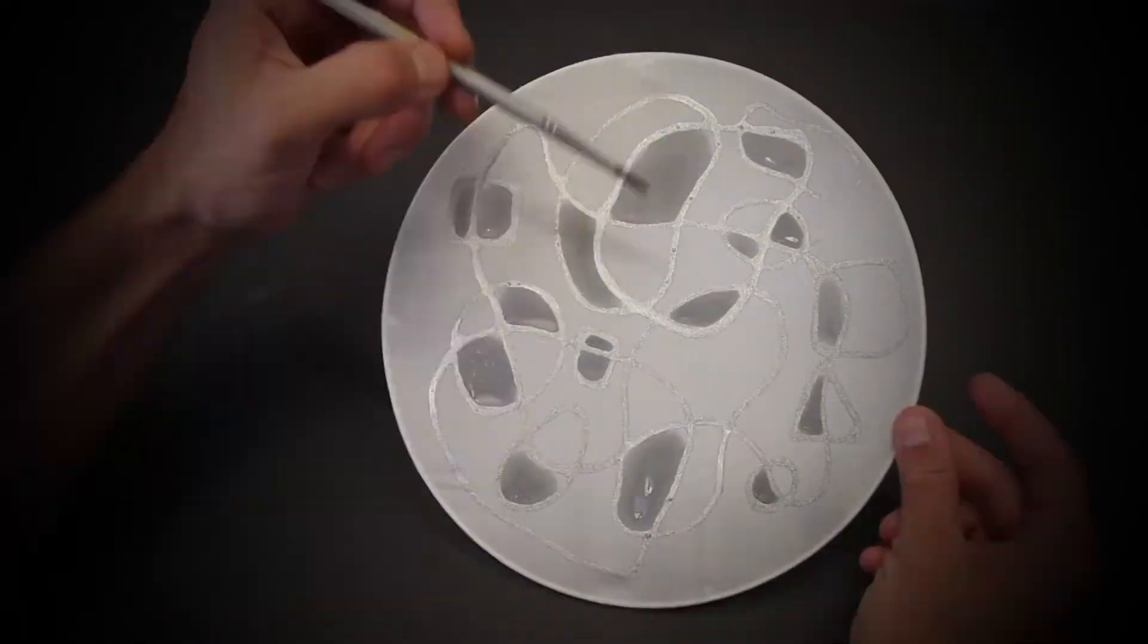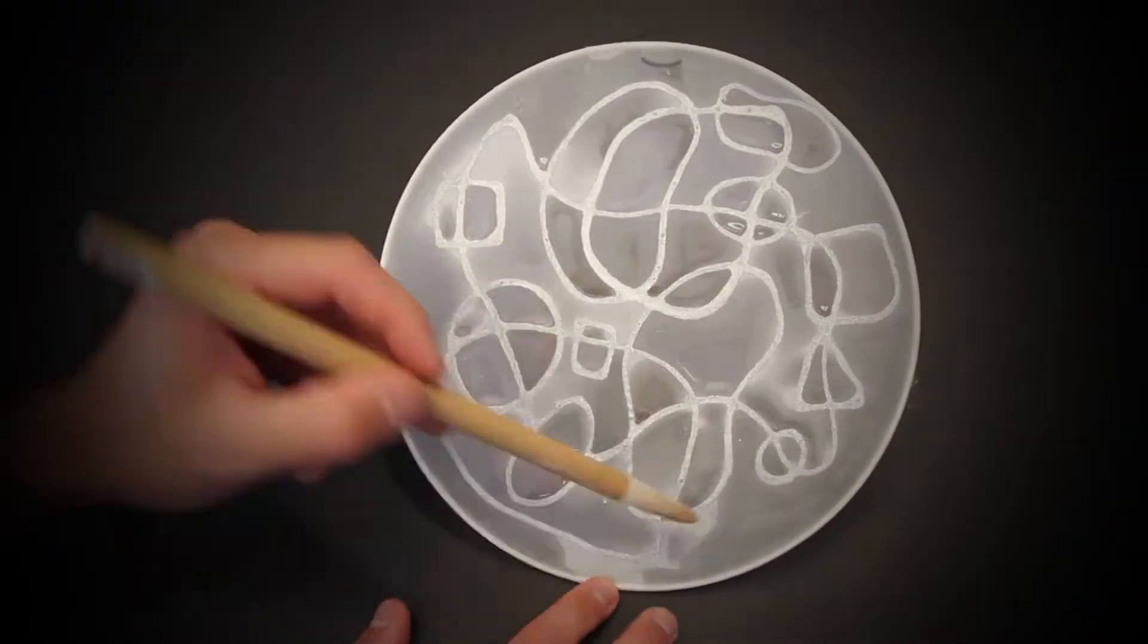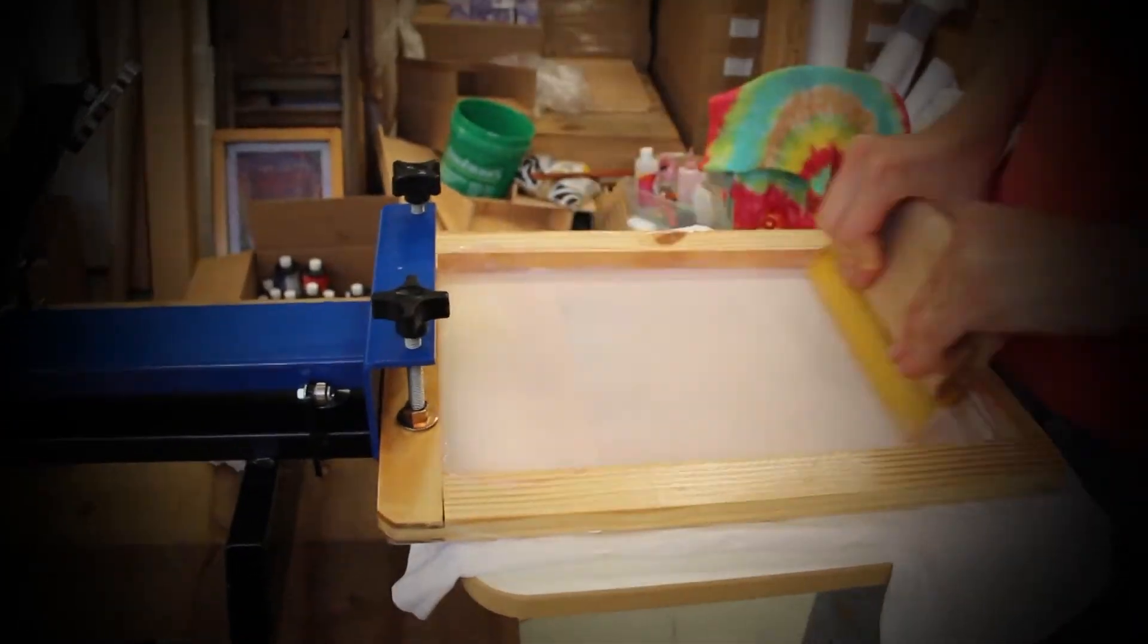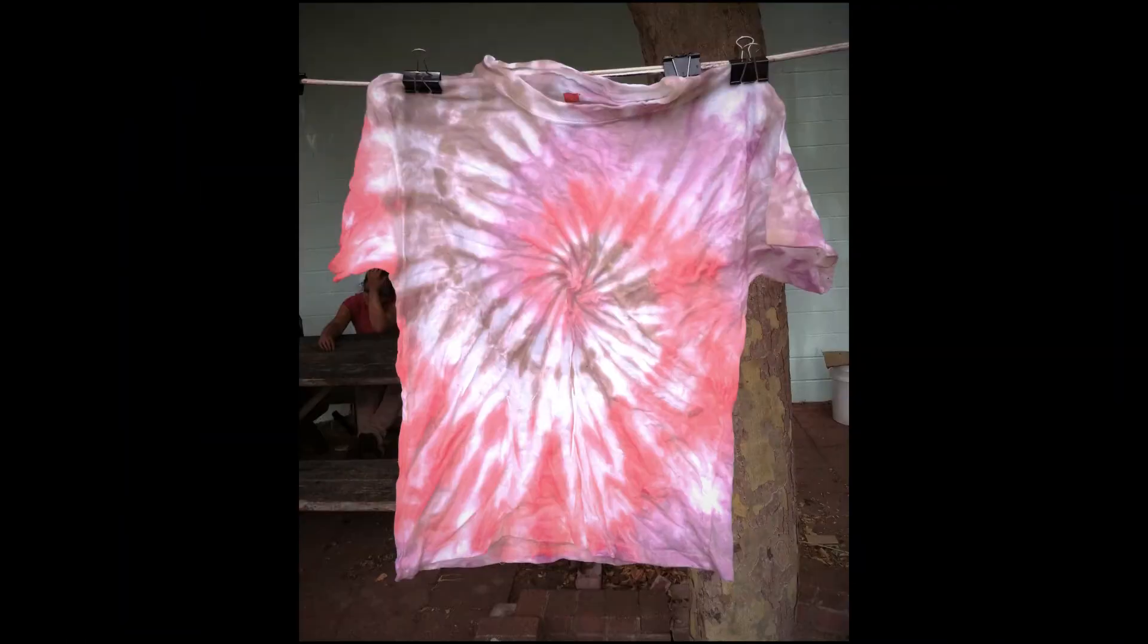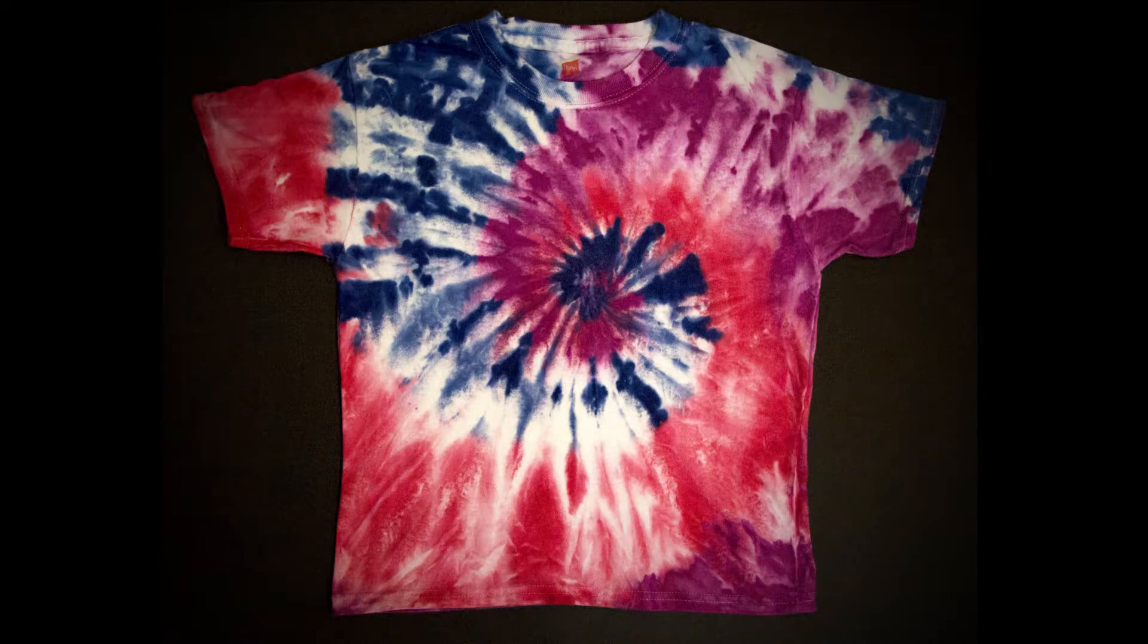Solar Fast can also be applied directly to fabrics with a brush, a silk screen, it's even great for tie dyeing. No chemical, steam, or heat setting required.